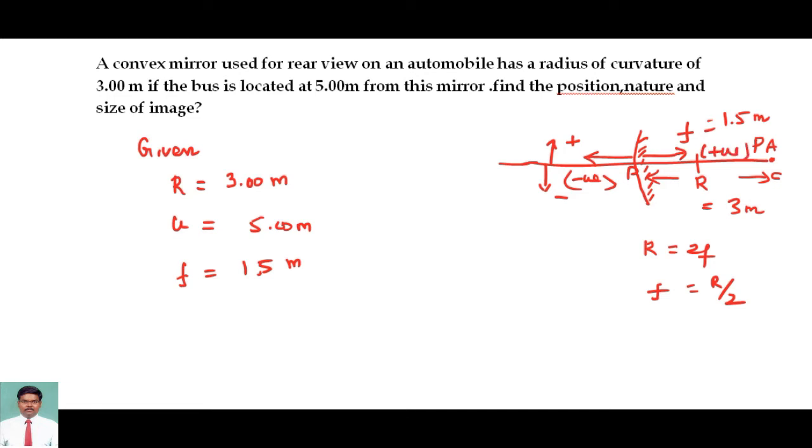u is the object distance. Here on the principal axis, I am keeping the object somewhere here at a distance of 5 meters.